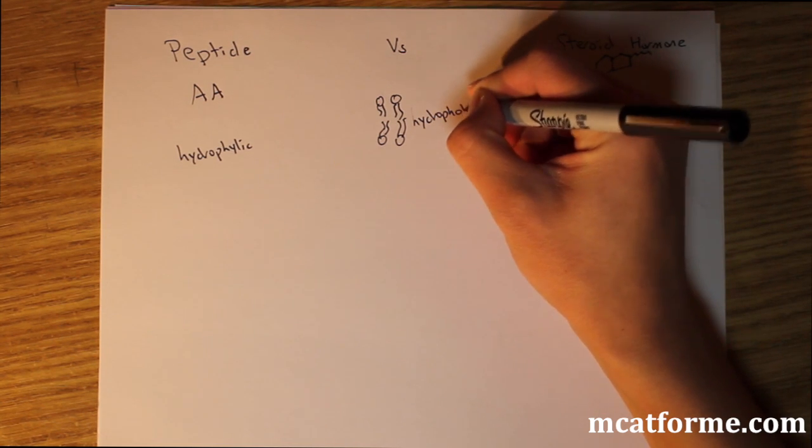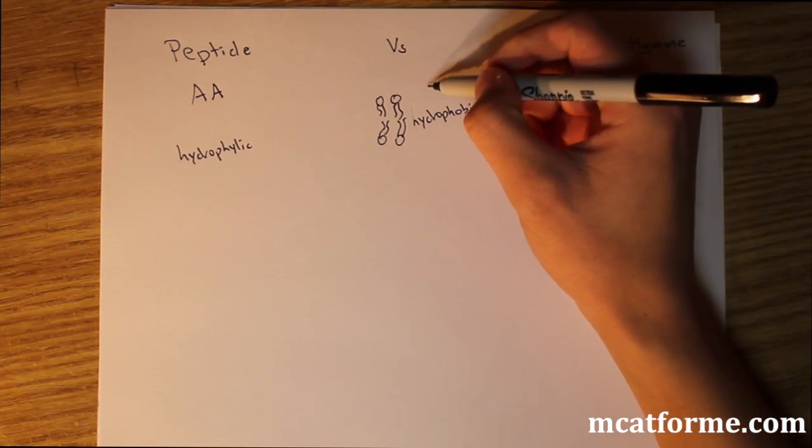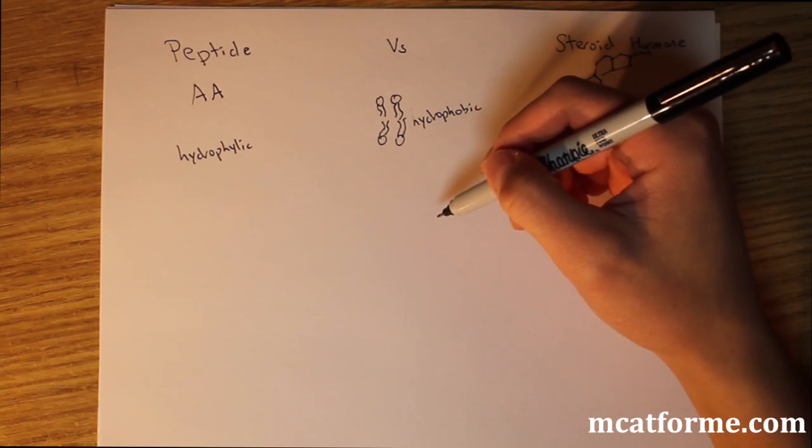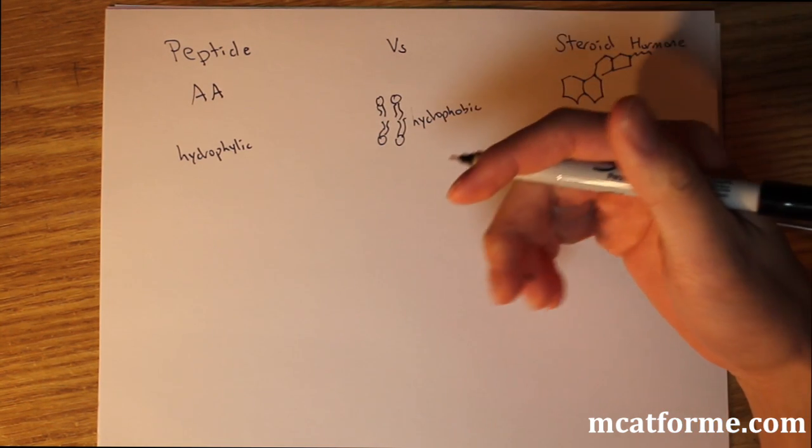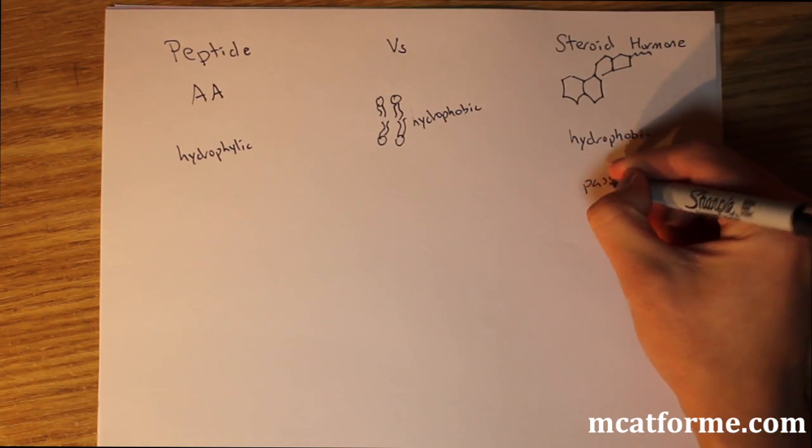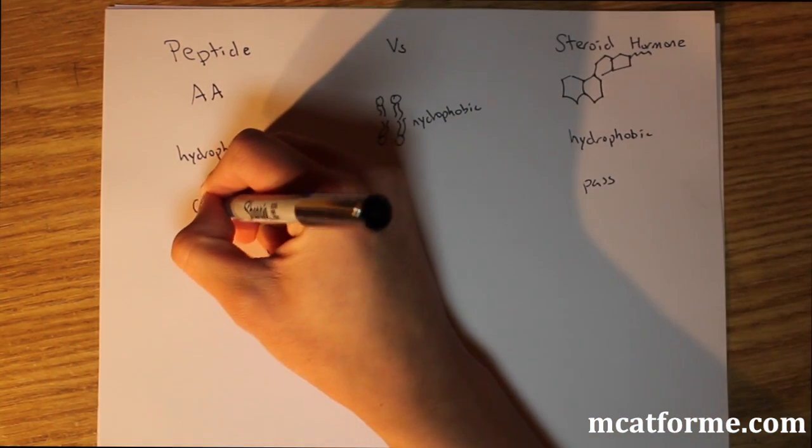Which means that hydrophobic materials like steroids can pass right through. They can pass right through the plasma membrane and get down into the cell. We know that steroids can pass through the membrane and peptides cannot pass.